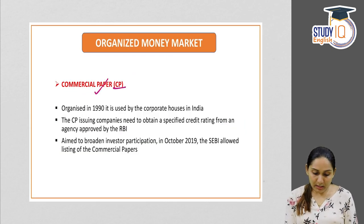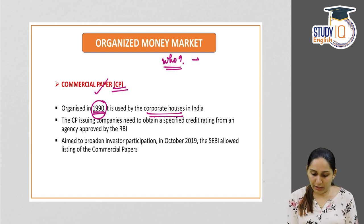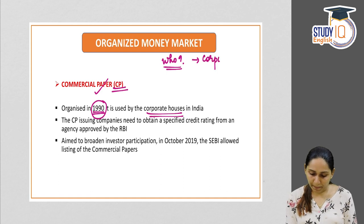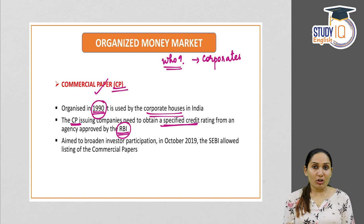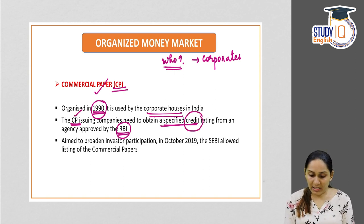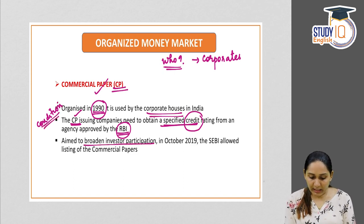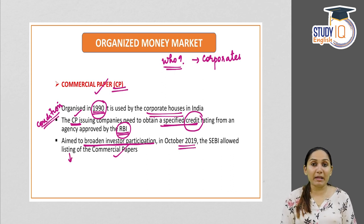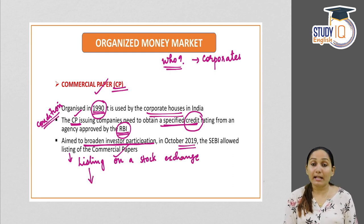Third is commercial paper, organized in 1990. It is issued by corporate houses. The issuing companies need to obtain a credit rating from an agency approved by RBI. It is aimed at broadening investor participation. In October 2019, SEBI allowed listing of commercial papers on a stock exchange, making them tradable.